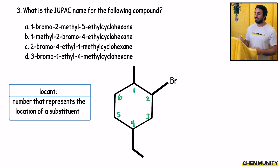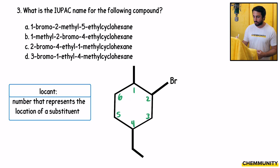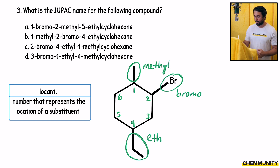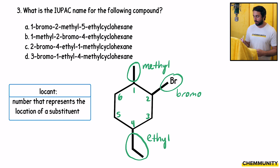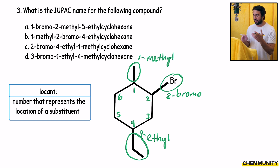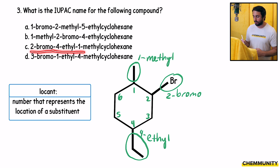We have to do it that way because these alkyl and halogen substituents are all of equal priority. So we go 1, 2, 3, 4, 5, 6 like that. Then we see what substituents we have: we've got a methyl, we've got a bromo, and we've got an ethyl. We've already numbered it, so now we just say what carbons they're on in alphabetical order. Bromo goes first at carbon 2, then ethyl at carbon 4, then methyl at carbon 1. We end up with 2-bromo-4-ethyl-1-methylcyclohexane. We got the lowest set of locants possible.